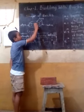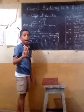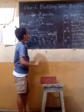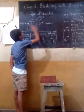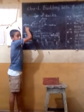Bricks have three parts: face, vertex, and edges.